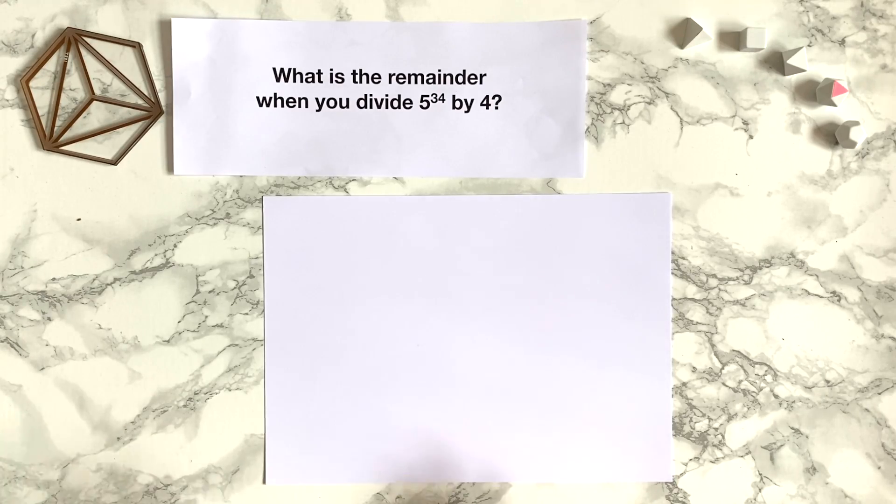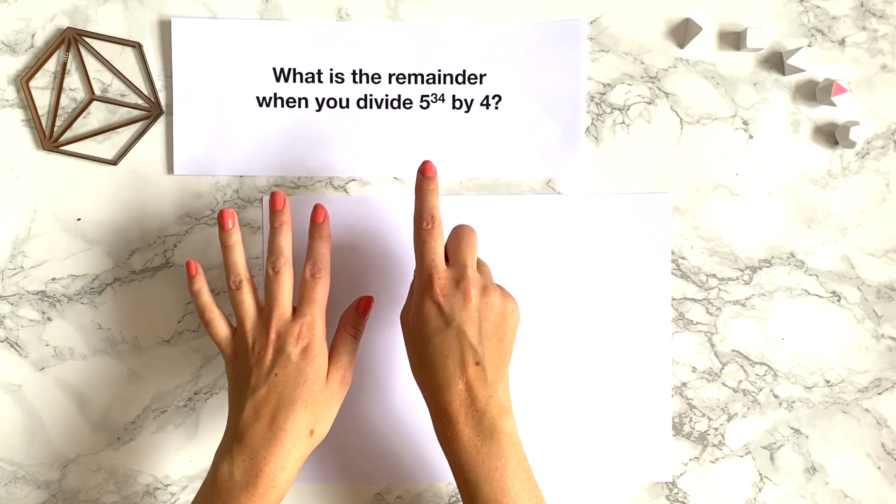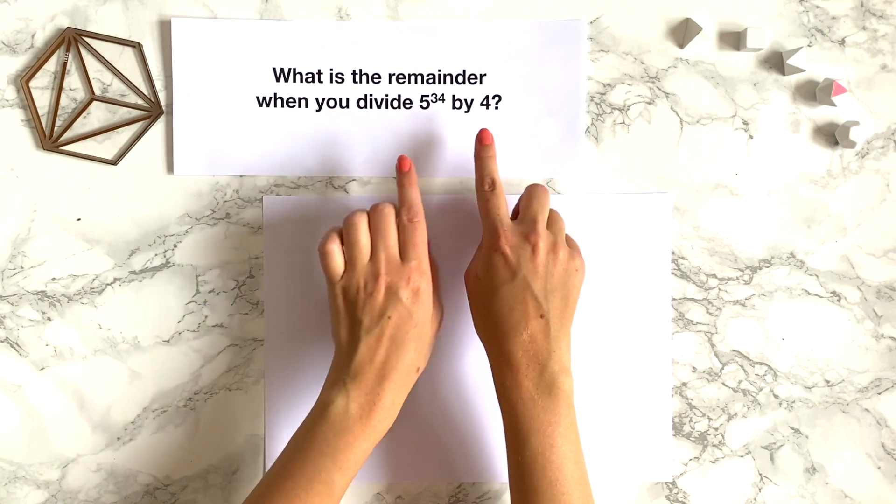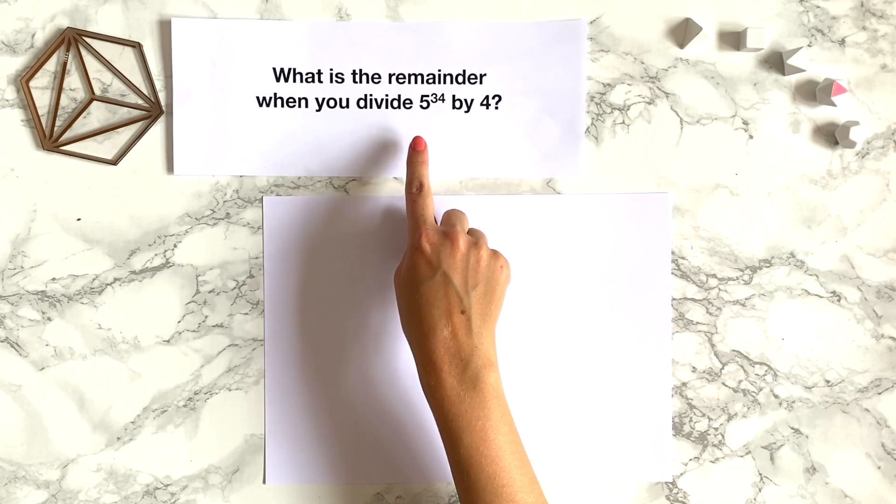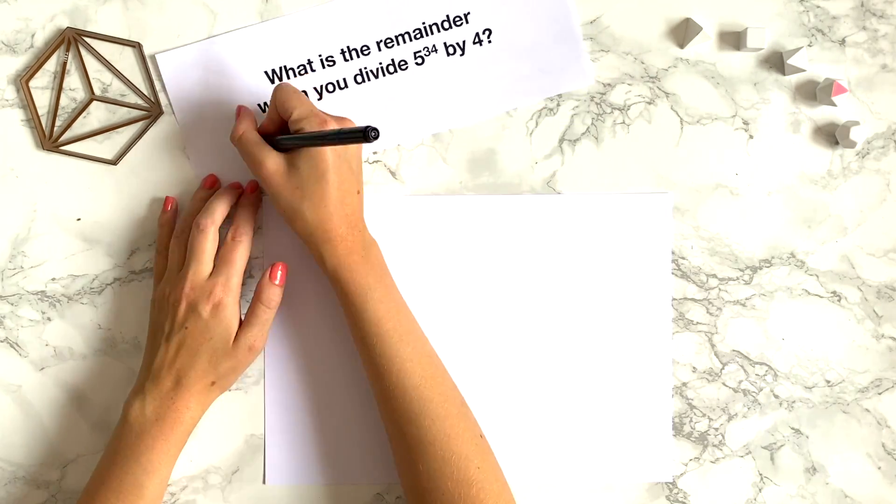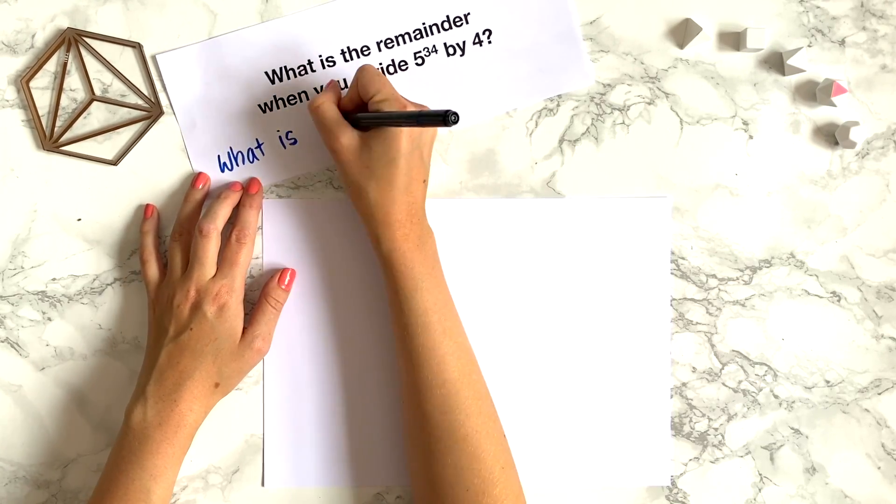From what we've previously discussed, we know that the question 'what's the remainder when you divide 5 to the power of 34 by 4' is actually the same as asking 'what is 5 to the power of 34 modulo 4?'